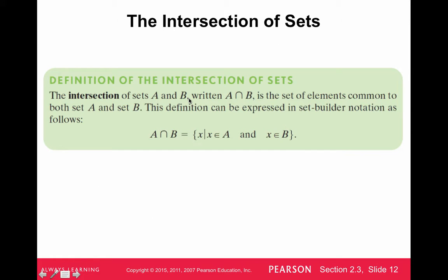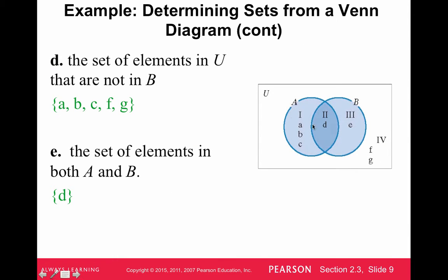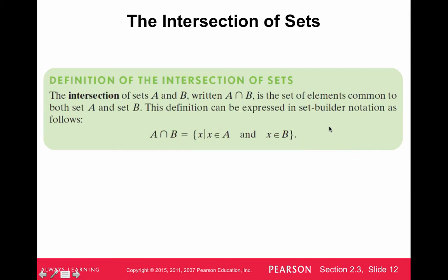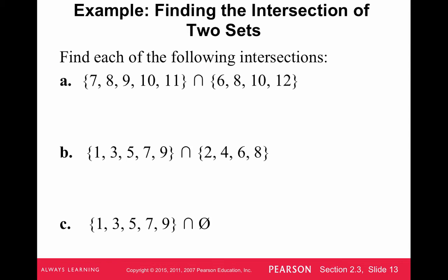The intersection of sets is the middle overlapping part — the intersection of A and B visually. Elements must be in both A and B. For example, the intersection of two sets where 8 and 10 appear in both gives {8, 10}. If one set has all odd numbers and another has all even numbers, the intersection is the empty set. And the intersection of any set with the empty set is also the empty set.